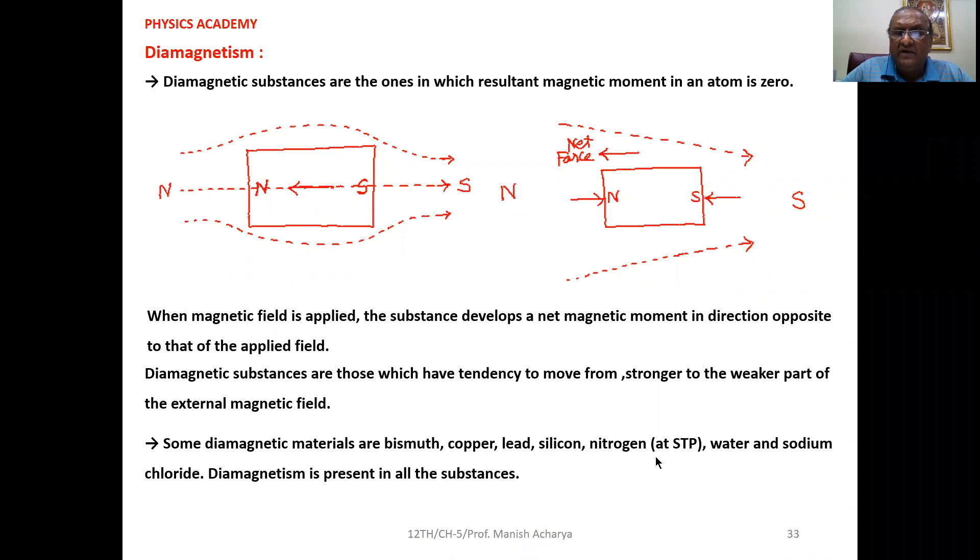Some diamagnetic materials are bismuth, copper, lead, silicon, nitrogen at STP, water, and sodium chloride. Diamagnetism is present in all the substances.